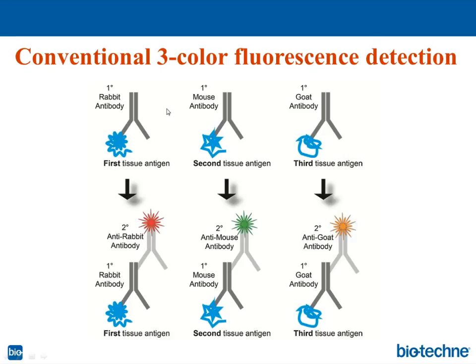Here we have a rabbit primary antibody, mouse, and goat, and then we detect them using secondary antibodies raised against rabbit, against mouse, and against goat. So there is no expected cross-interference — for example, anti-goat secondary antibody will not cross-react with mouse primary antibody. This is a very convenient and easy way to do multicolor fluorescence.